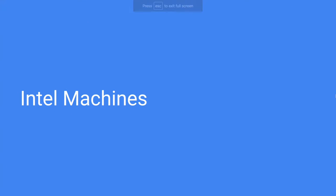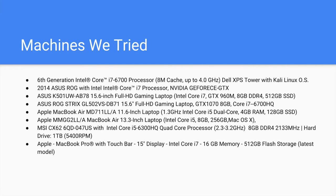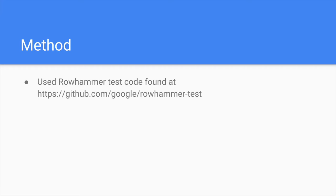Now that we have some background on Rowhammer, let's talk about the machines we actually attacked. We started with our Intel machines, which includes this list, most of which are personal laptops. All of these contain Intel chips which, according to the literature, are vulnerable to this exploit. The method we used was the Rowhammer test code found at this location.